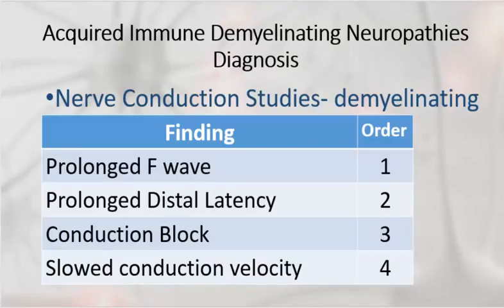Here are the features that are characteristic of any demyelinating neuropathy, but in Guillain-Barré they tend to occur in this particular order. The first finding is that of a prolonged F-wave. An F-wave is when you give an electrical impulse, it goes up the nerve, hits the spinal cord, bounces off, and comes all the way back, causing a secondary reaction in the motor fibers. It is a very good indicator of the conduction velocity of the entire nerve, including its proximal segments, which can't be assessed any other way.